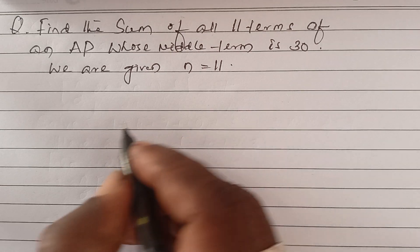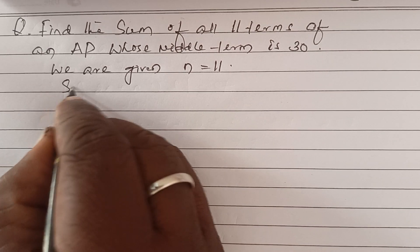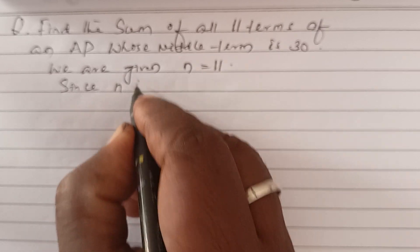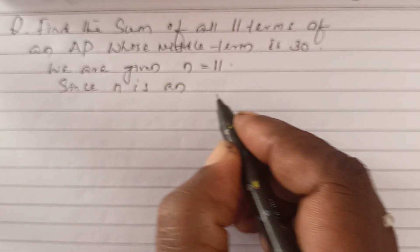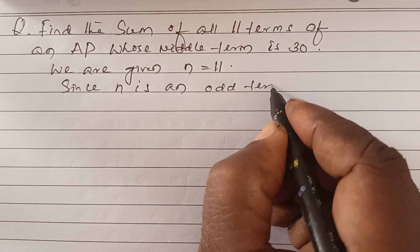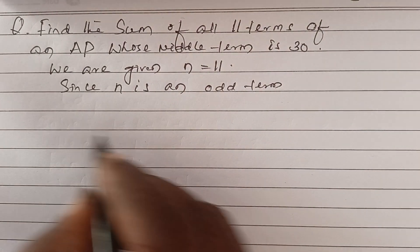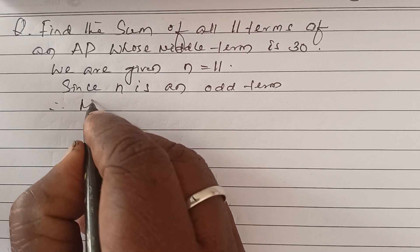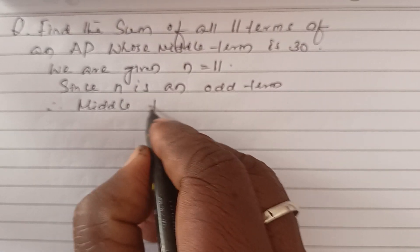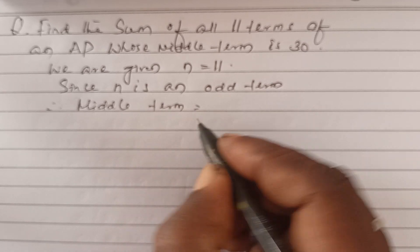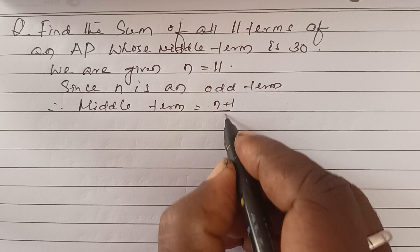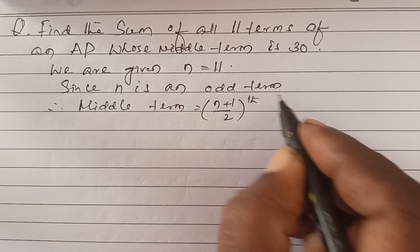Since n is odd term, the middle term is equal to n plus 1 by 2 term.